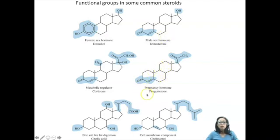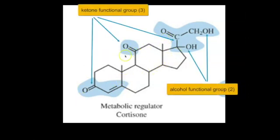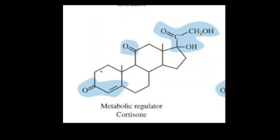There's also progesterone, which is only in women — the pregnancy hormone — and it is also a steroid with the basic four-ring carbon skeleton, but its functional groups differ from testosterone and estradiol. Cortisone is naturally present in the body as a steroid hormone. It has the same basic four-ring carbon skeleton, with functional groups different from estradiol, testosterone, and progesterone. Cortisone suppresses the immune system and reduces inflammation.